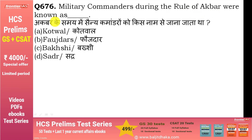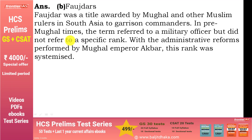Military commanders during the rule of Akbar were known as — Faujdar. Faujdar title Mughal और other Muslim rulers के South Asia में garrison commanders को दिया जाता था. Pre-Mughal times में यह rank fix नहीं होती थी. इसको systematize Akbar ने करके किया था.